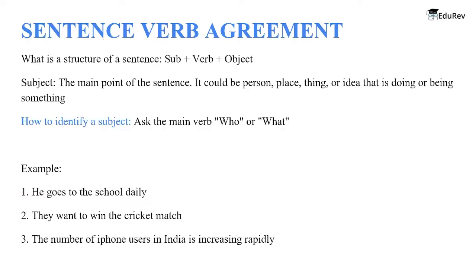The first topic is subject-verb agreement. This topic forms the basis of your verbal ability. What is the structure of a sentence? Any sentence has a subject, a verb, and an object. These three things are a must for a complete sentence.